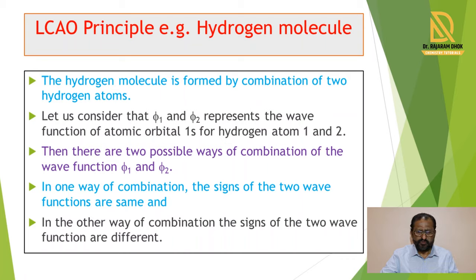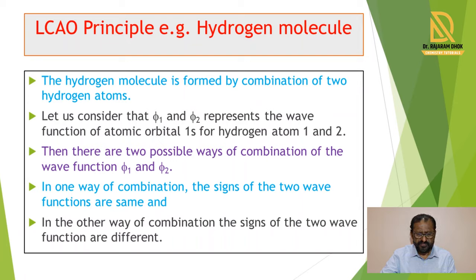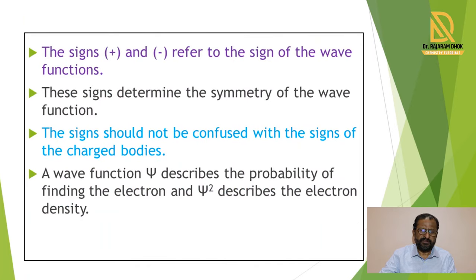The hydrogen molecule is formed by the combination of two hydrogen atoms. The wave function of the first hydrogen atom is phi1, and the wave function of the second hydrogen atom is phi2. These wave functions are for the 1s orbital of hydrogen atom 1 and hydrogen atom 2. There are two possible ways to combine these wave functions: in one way the signs of the two wave functions are the same, and in the second way the signs are different. These signs are represented by plus and minus symbols, which are not mathematical terms.